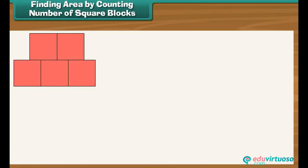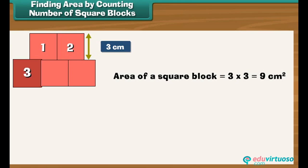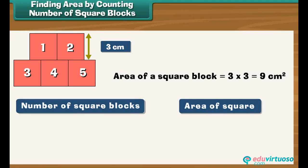Now let us calculate the area of a figure made up of square blocks, each of length three centimeters. The area of each square block of length three centimeters is three into three, which equals nine centimeters square. Count the square blocks — they are five in number. So the area of the figure is the number of square blocks multiplied by the area of one square block. Therefore, the area is five into nine, which equals 45 centimeters square.